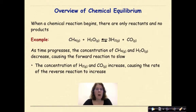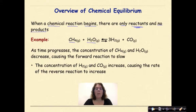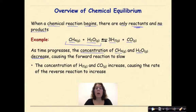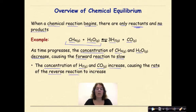Overview of Chemical Equilibrium. When a chemical reaction begins, there are only reactants and no products at all. For example, we have methane and water as water vapor producing hydrogen gas and carbon monoxide. At the very beginning, we only have methane and water vapor. As time progresses, the concentration of methane and water vapor will decrease, causing the forward reaction to slow down.